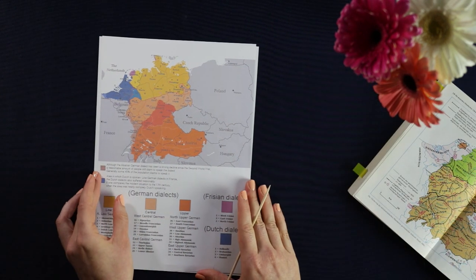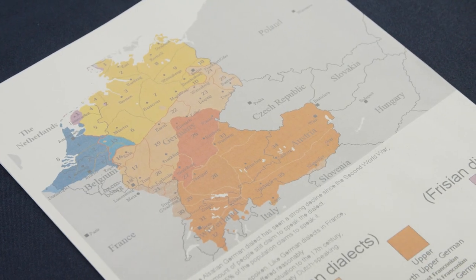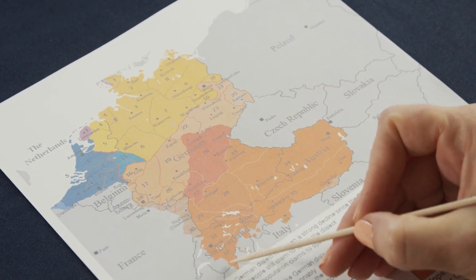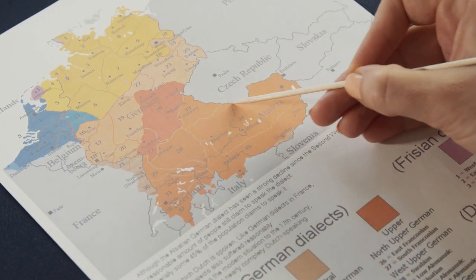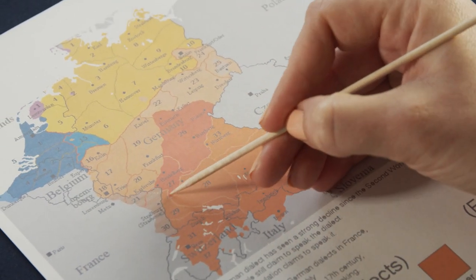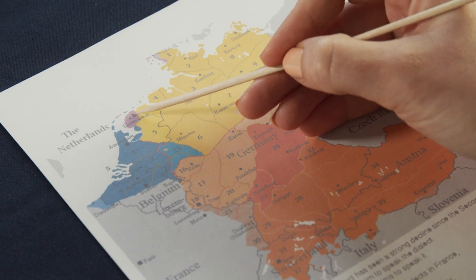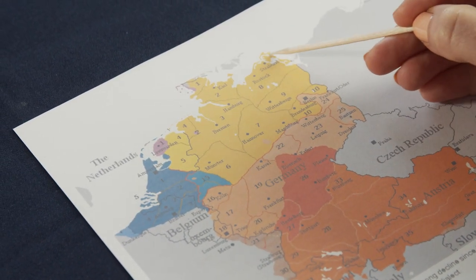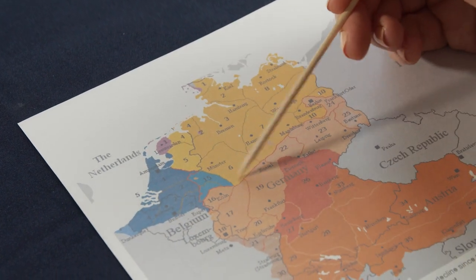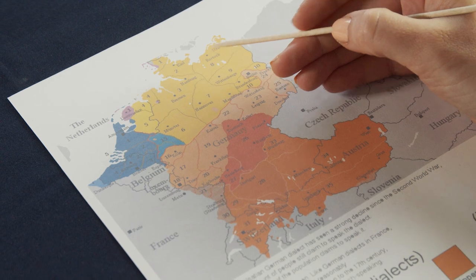Let's have a closer look at these different dialect families. I can link to these maps — they're really interesting and you can just find them on Wikipedia. Basically here you have the Upper German dialects, which sometimes go all the way up here depending on how you want to classify them. Here you have the Central German dialects, and in the north you have the Lower German dialects. And here we also have the Dutch dialects and Frisian included.